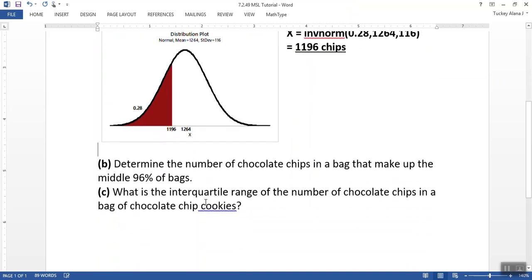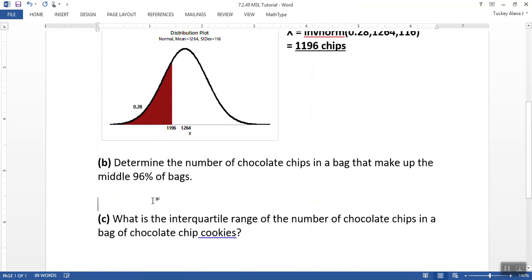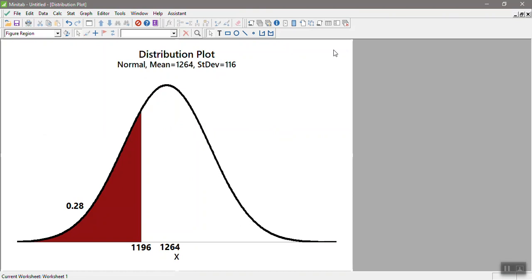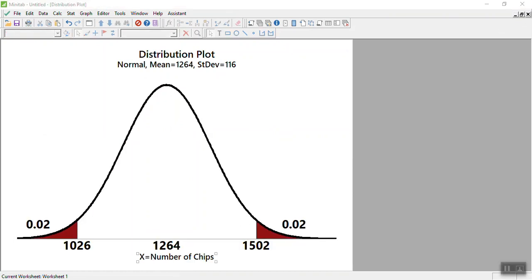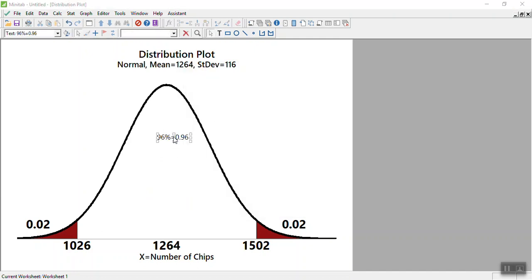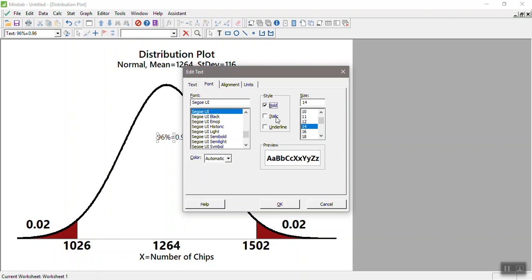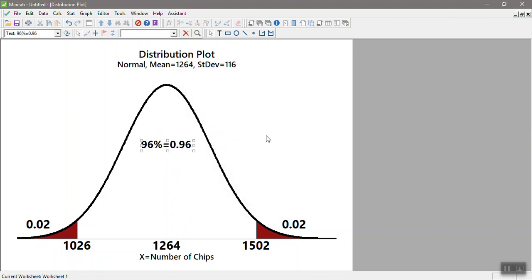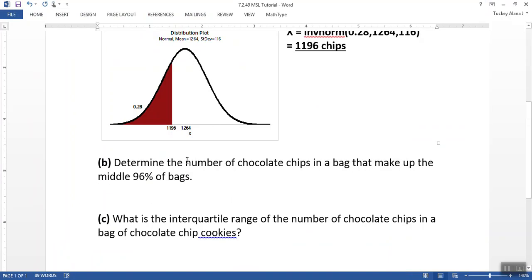Now what about letter B? Determine the number of chips in a bag that make up the middle 96%. Let me go back to Minitab for a second. So we have the middle 96% is in here, in the center. So if you want to think of it this way, you've got 96%, which by the way is 0.96 right there in the center. That means that I have 4% left over for both of the tails, so I'd have 0.02 and 0.02, so 2% in each tail. Now the computer is telling us that the answers are 1026 and 1502, but we're going to prove it.